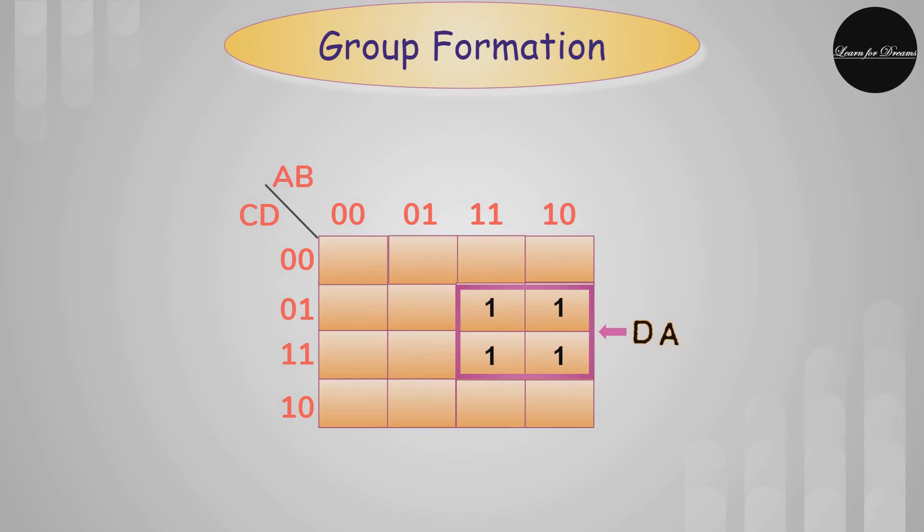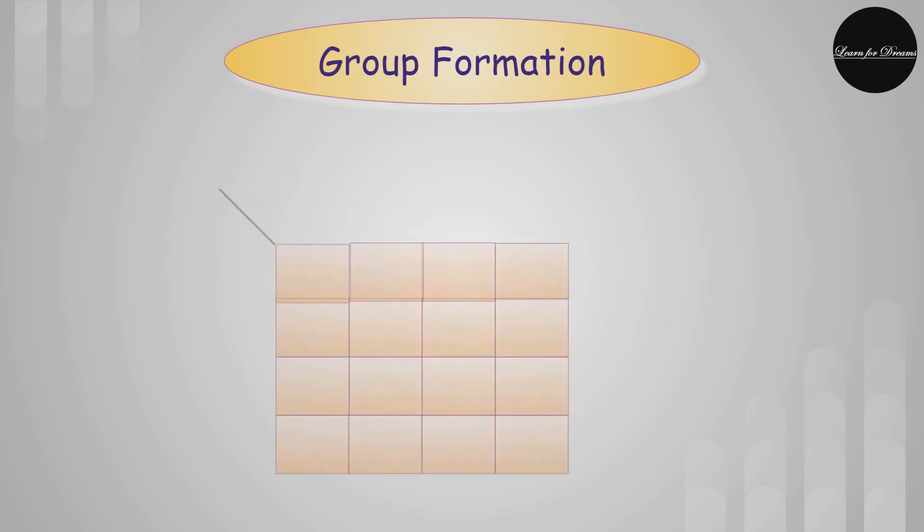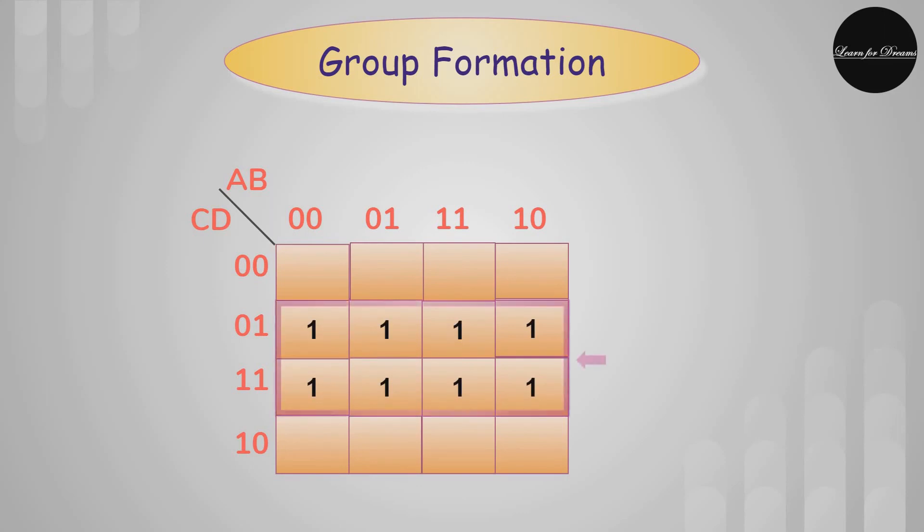Here this is the eight ones group on the left hand side. The C will get neglected and only D will be considered. And on the top all the 00, 01, 11, and 10 will get neglected because they all cancel each other.